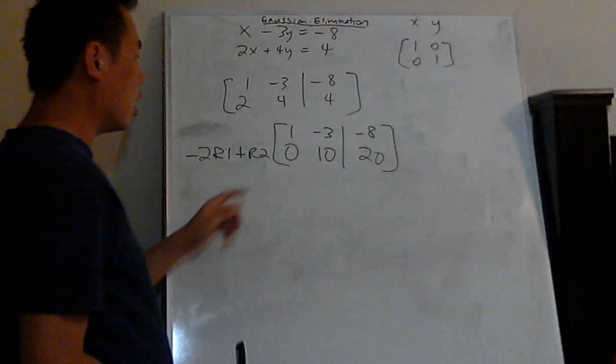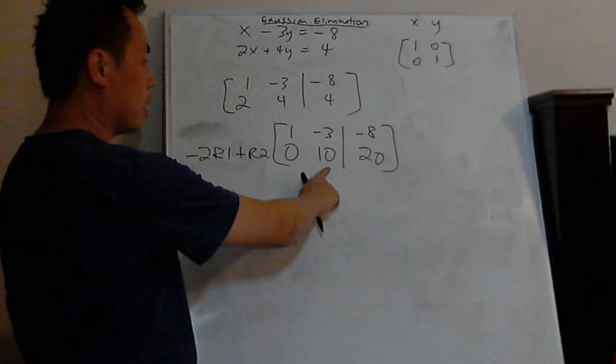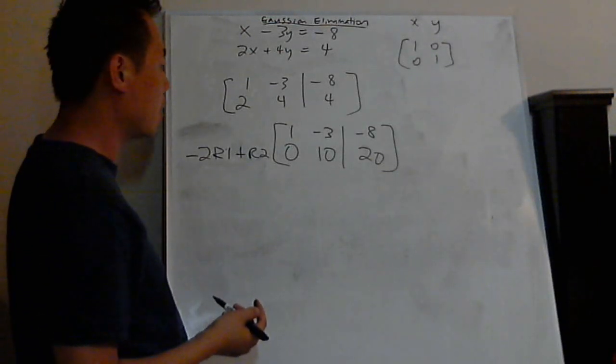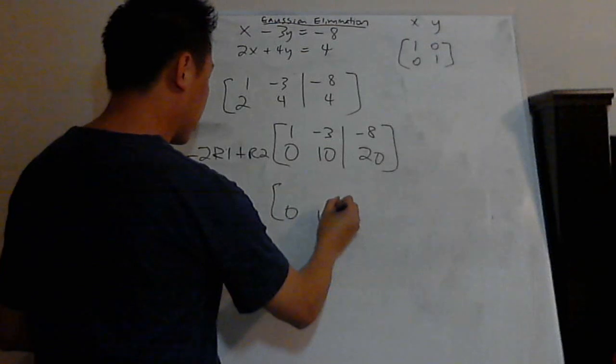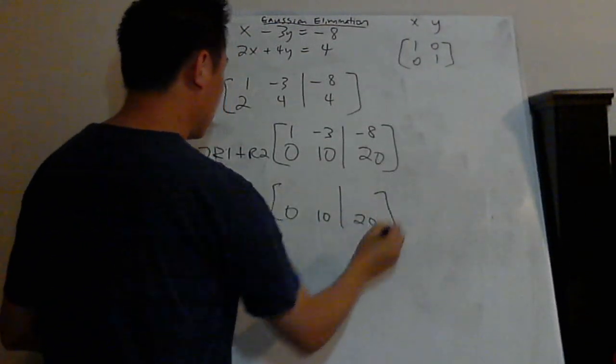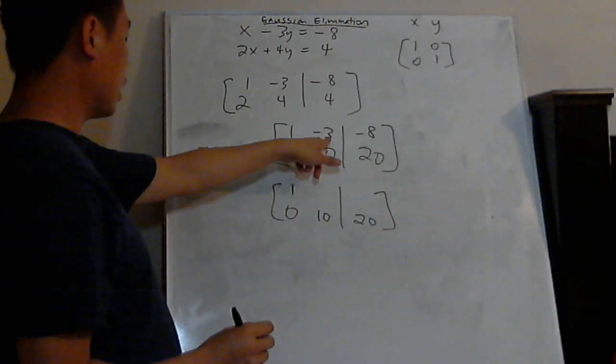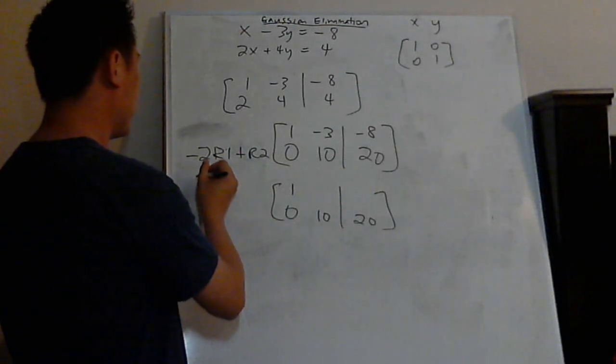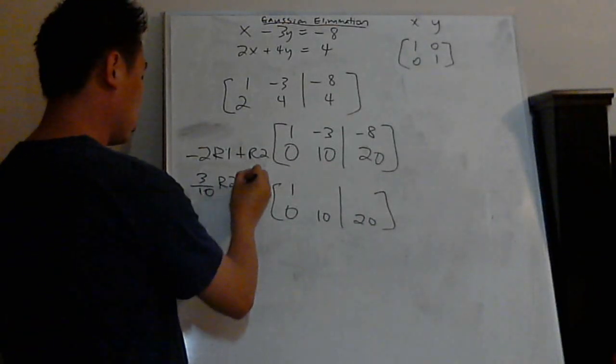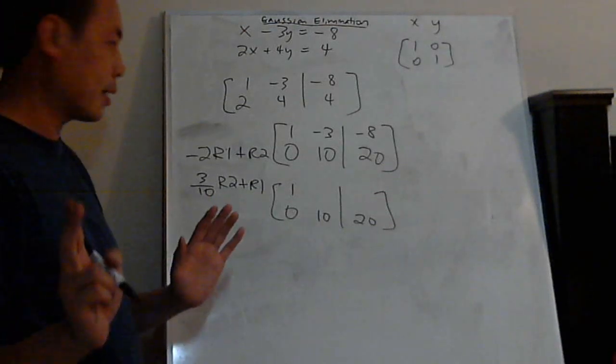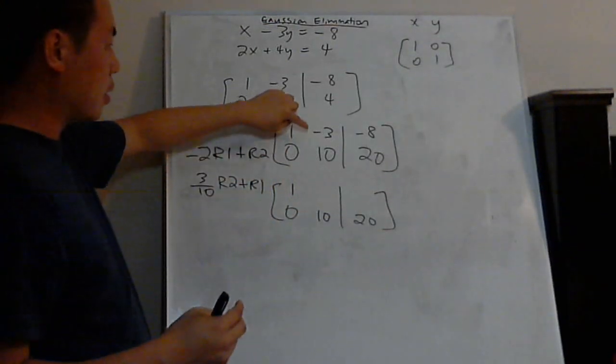Because you always want to do the zeros first. They're the hardest ones to do. And then after you get all the zeros done and match up, the ones are really easy. You just multiply by a scalar and all of this goes the end. So let's do the negative three now. So okay, how can I make this a zero? Well, somehow I got to make this a three. So maybe I can multiply by three over ten. How about that? If I multiply this by three over ten.